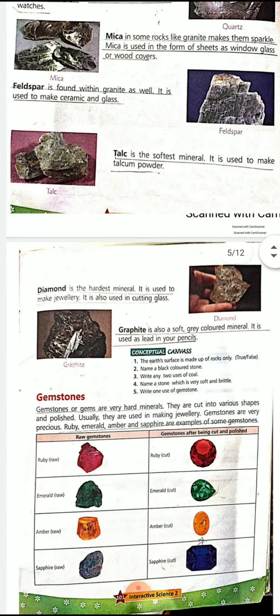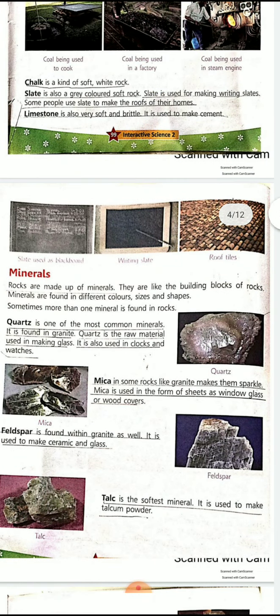Quartz is one of the most common minerals. It is found in granite. Quartz is the raw material used in making glass and is also used in clocks and watches. We will read two or three minerals on this page, and the rest we will do in the next class. The kitchen top is generally made of granite, which is shinier than your floor.